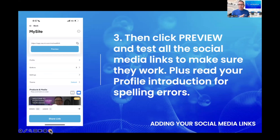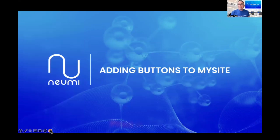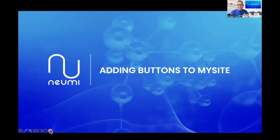Now what we can do is preview to make sure they're working correctly. Step three in this part is to click the preview button and test all of the social media links to make sure they work, and also read through your profile. Click preview and make sure Facebook connects, Instagram connects, and everything connects properly. If not, you may have used the wrong username or left in some spaces. Also read your bio and make sure there are no spelling errors, because first impressions — you never get a second chance at a good first impression. When you've done that, click the done button at the top and you have achieved step two. Press pause here, pull out your phone, make sure you have the second step complete before moving on.